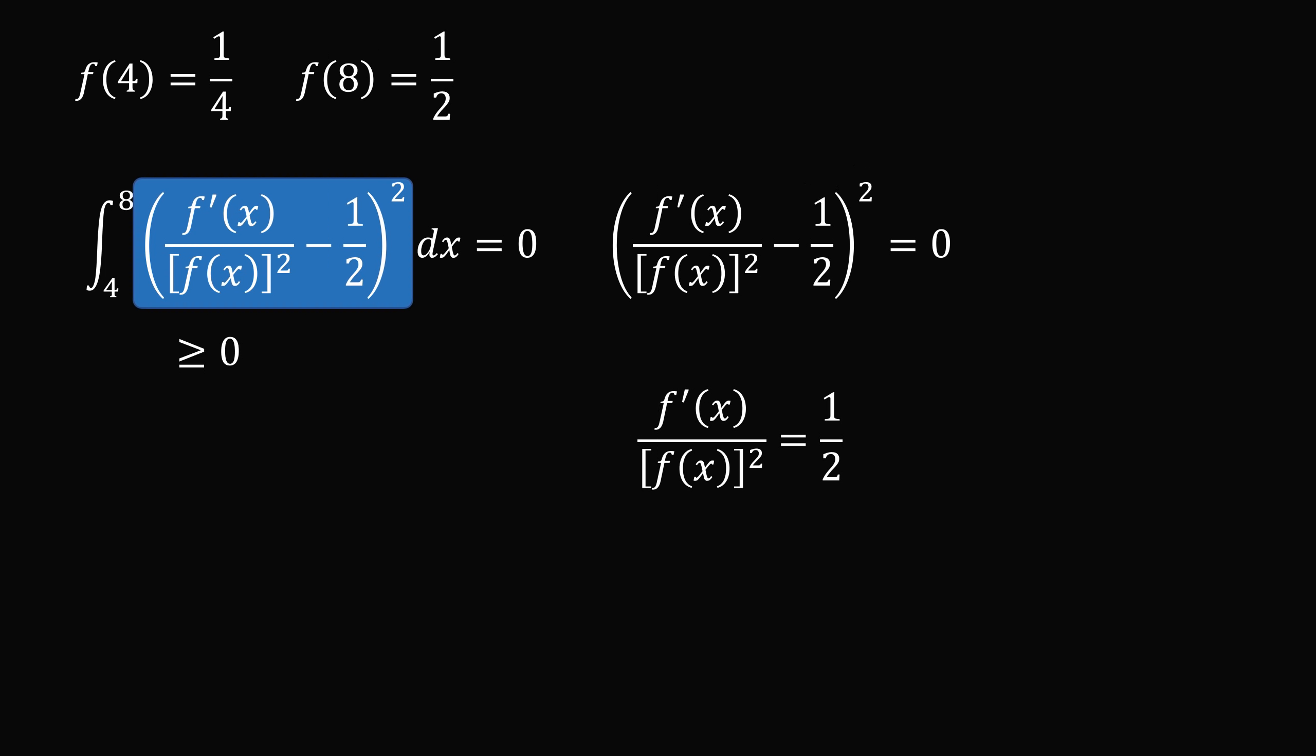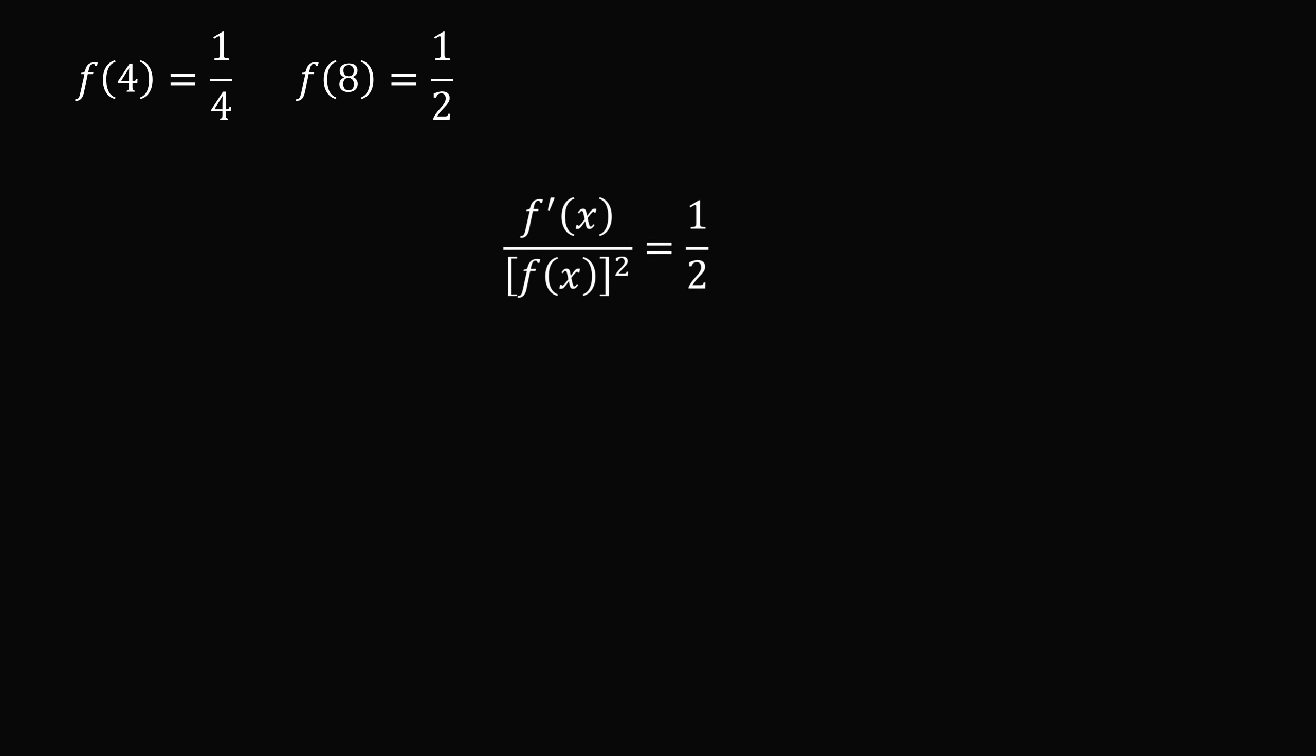We can then take the square root of both sides, and then add 1 half to both sides. So we get f'(x) over [f(x)]² is equal to 1 over 2. We will now take the integral of both sides. The left-hand side will be negative 1 over f(x), and the right-hand side becomes x over 2 plus c.